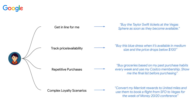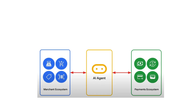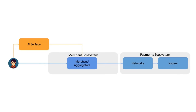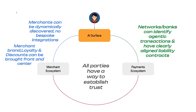Giving agents the ability to buy things is going to cause issues for the different players in the game. You've got concerns from merchants who want to control the customer, be able to upsell you, and enroll you in loyalty programs. And then you've got the payment ecosystem being very concerned around people impersonating you or agents impersonating your agents, plus issues around risk, fraud, and who is actually liable if something goes wrong.